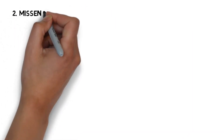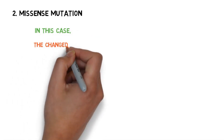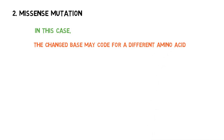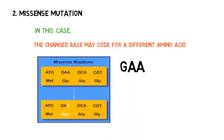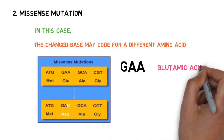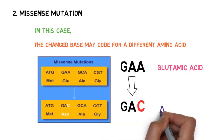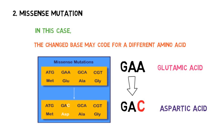Now we see the second type: missense mutation. In this case, the changed base may code for a different amino acid. That means the changed base will code for some other amino acid. As shown in this image, codon GAA codes for glutamic acid, and it gets converted to GAC, which codes for aspartic acid. That means the amino acid is replaced, due to which we see changes. So that was missense mutation.